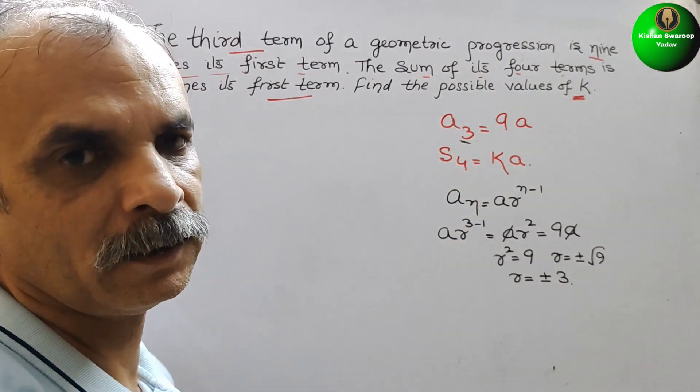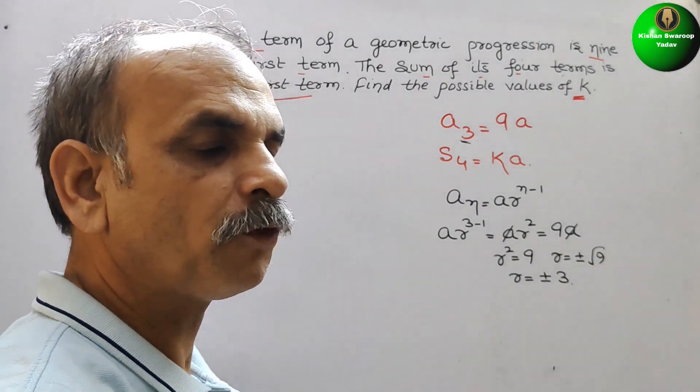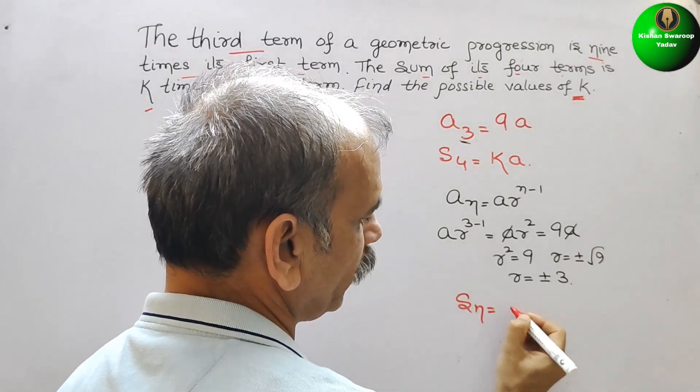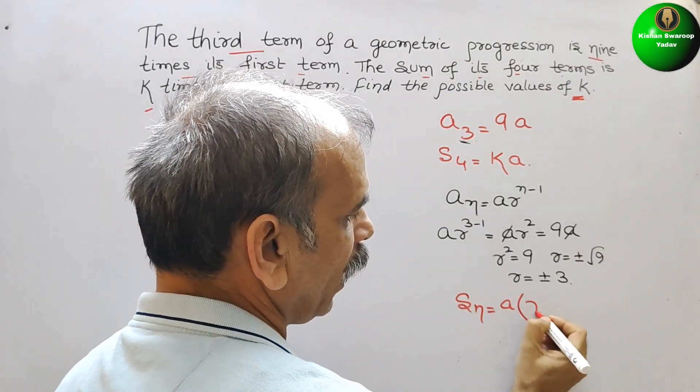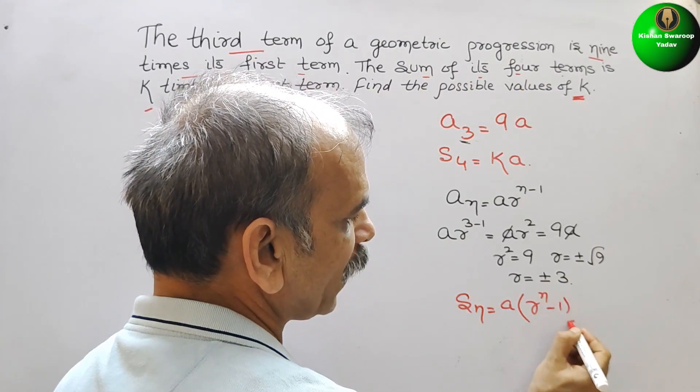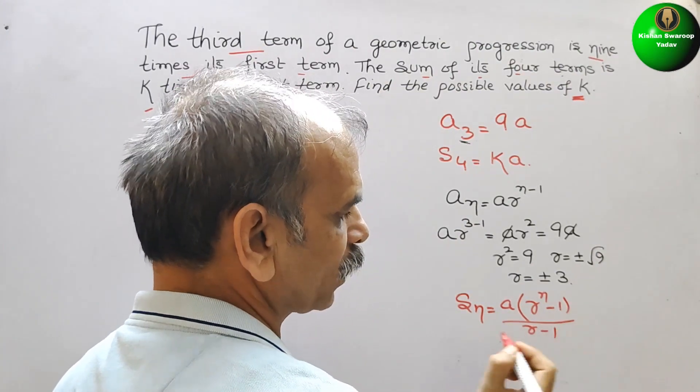Next they have given you s₄ is equal to k. So what is the formula for sum? s₄ is equal to a(rⁿ - 1)/(r - 1).